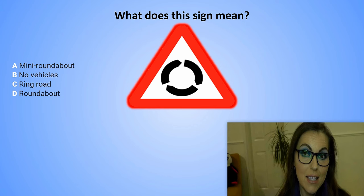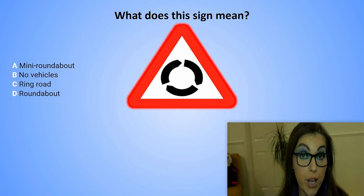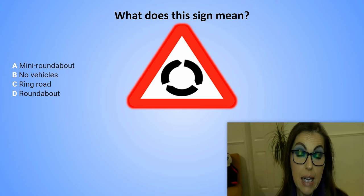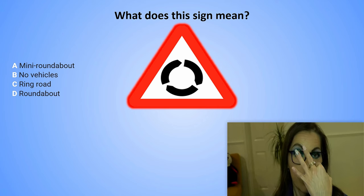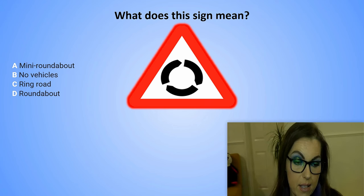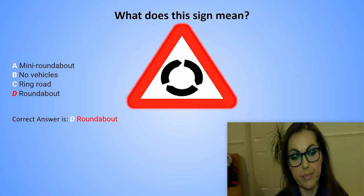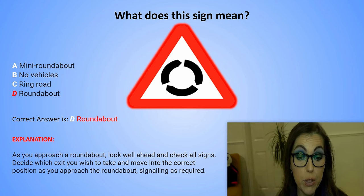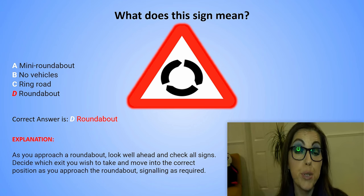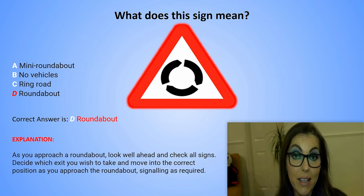What does this sign mean? A. Mini roundabout. B. No vehicles. C. Ring road. D. Roundabout. The correct answer is D. Roundabout. Explanation: As you approach a roundabout, look well ahead and check all signs. Decide which exit you wish to take and move into the correct position as you approach the roundabout, signalling as required.